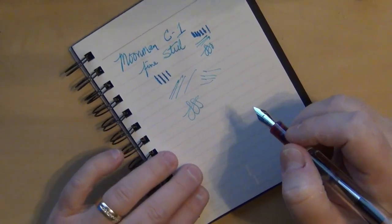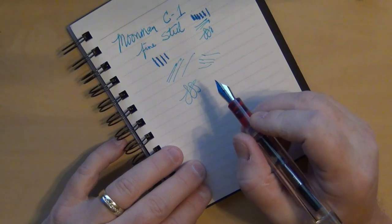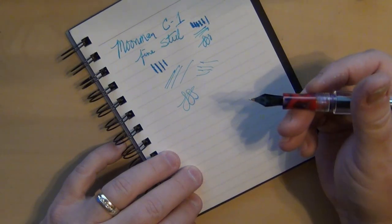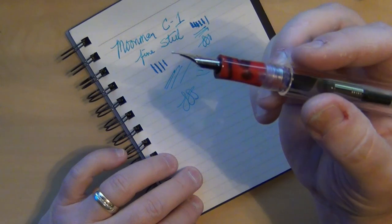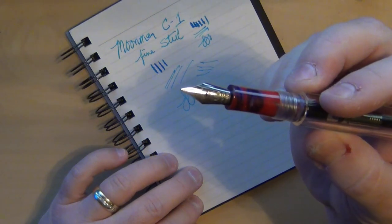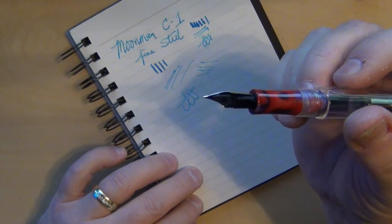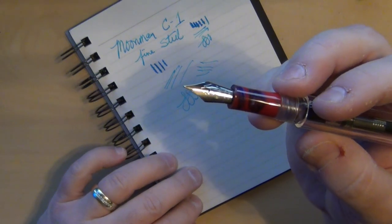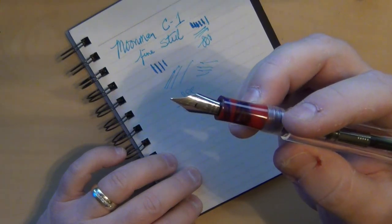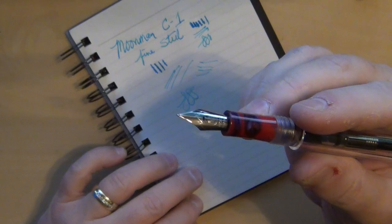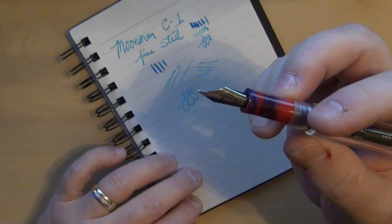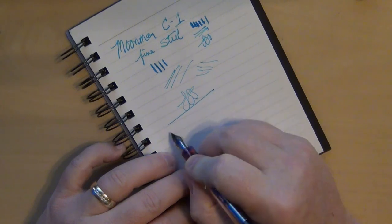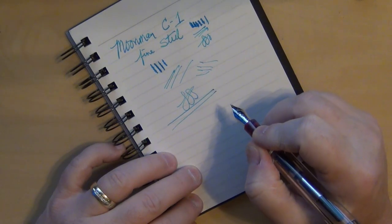This is the Moonman C1. This has a fine steel nib. And this is a fairly firm nib. You can get a little bit of line variation apparently if you go ahead and you flex on it just a little bit. It's not the smoothest nib in the world. I mean, I didn't expect a whole lot for it. If you're going to charge $20, $21 for a pen, I would expect just a little better. But I will probably spend some time with some micro mesh maybe and smooth that nib out just a little bit to make it more to my liking.